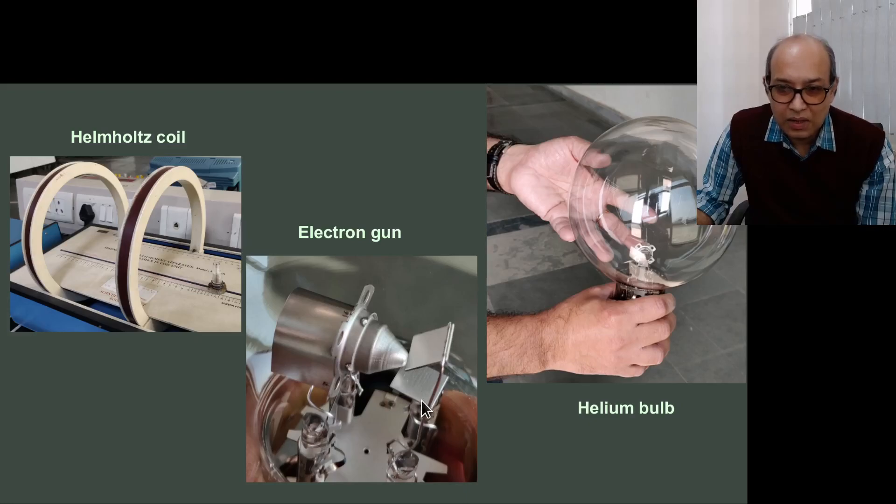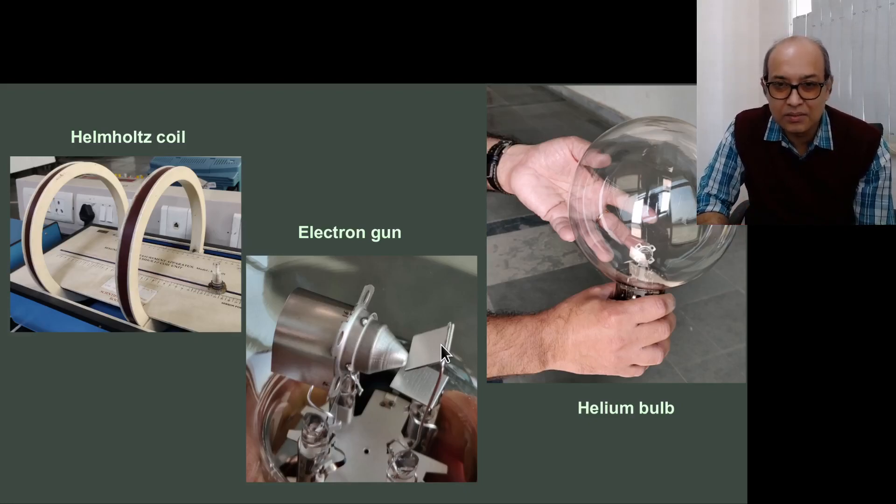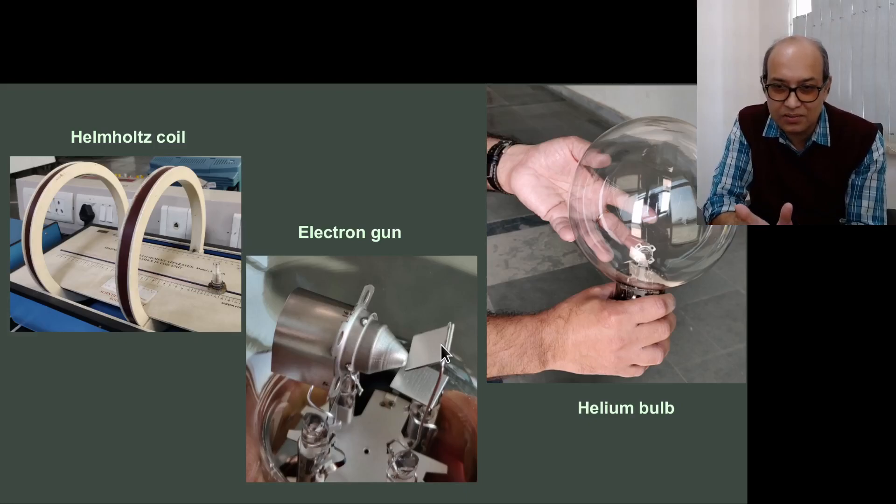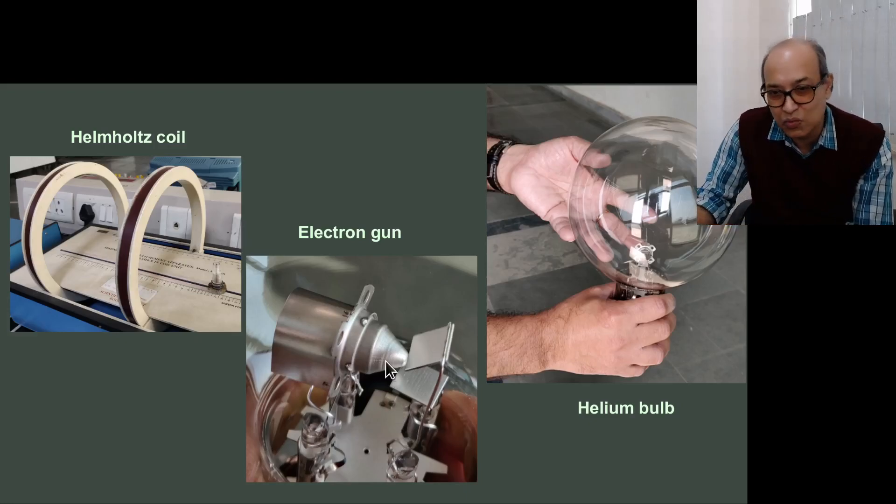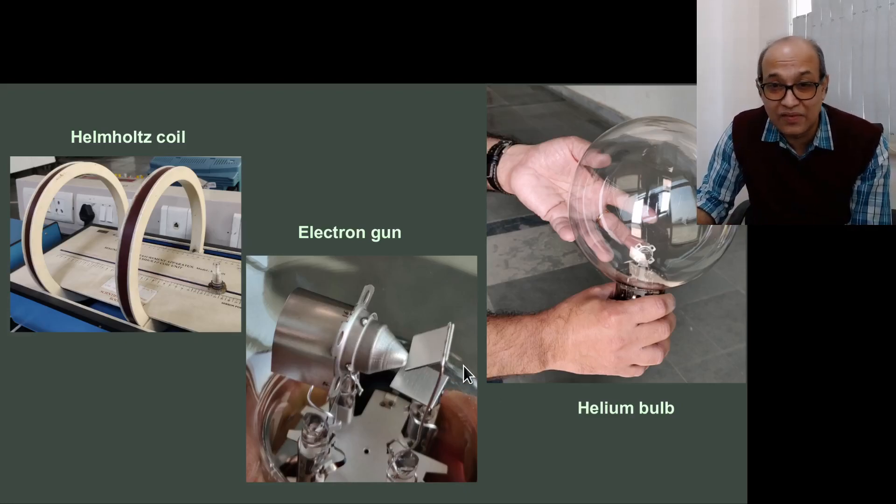And then we also have two plates. These we can keep at different potentials. They are called deflecting plates. So you can collimate or deflect the electron beam which comes out at the end of this anode if you want to deflect them.